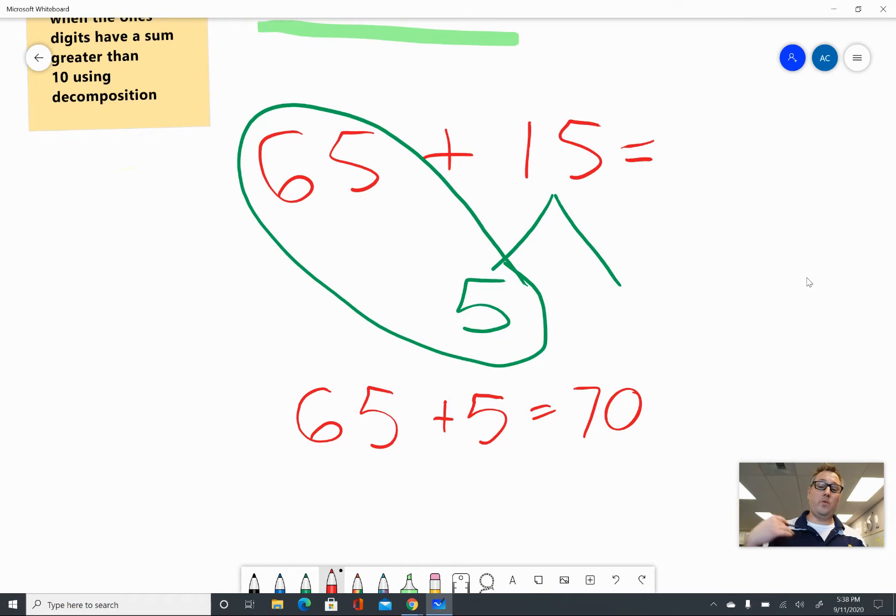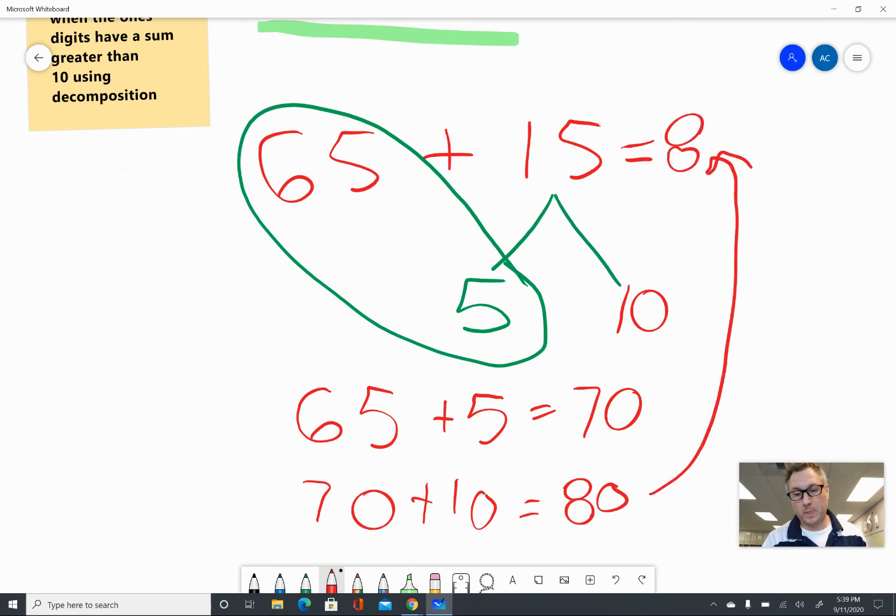Now we don't want to forget what we have left. If we took out five, we have 10 left. And we want to take that 10 and put it right down over here. So I am going to do just that. I'm going to say 70 plus 10 equals, oh, I can count by tens, 70 plus 10 is 80. And that is my answer. 80.